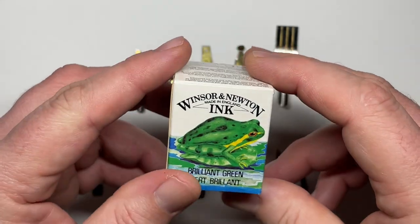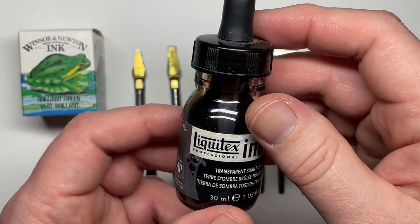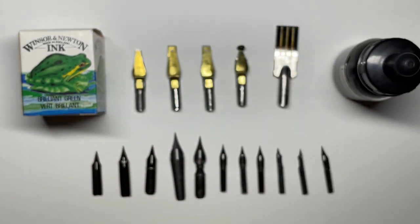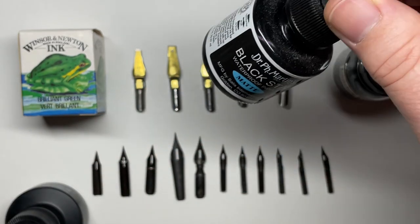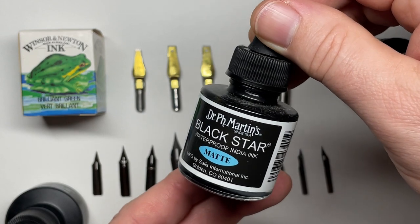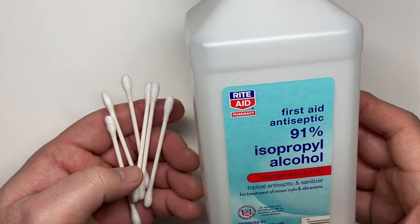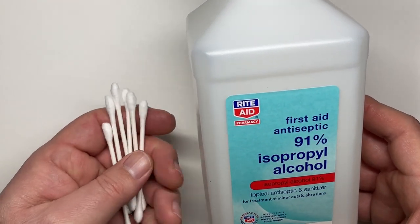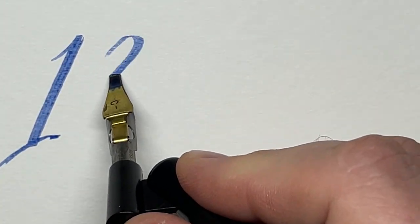Now as far as ink goes, I use all kinds of ink. I use Winsor Newton, I use Rotring, I use Liquitex, this Higgins Black Magic, and I use a lot of the Dr. P.H. Martin's. This is a matte black ink. So I use all kinds of different inks, it doesn't really matter. As for cleanup I just use isopropyl alcohol, so it's pretty simple for me.